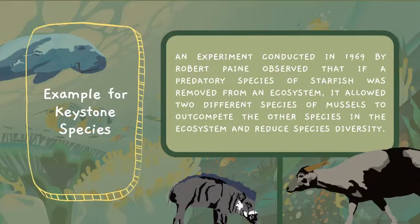An experiment conducted in 1969 by Robert Paine observed that when a predatory species of starfish was removed from an ecosystem, it allowed two different species of mussels to outcompete the other species in the ecosystem, reducing species diversity.